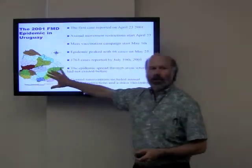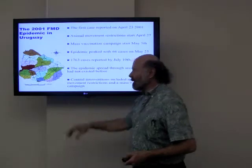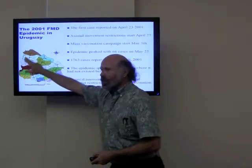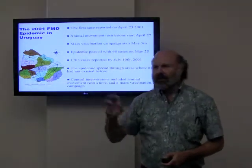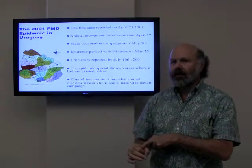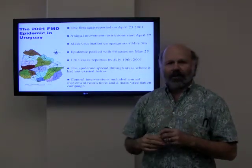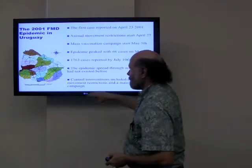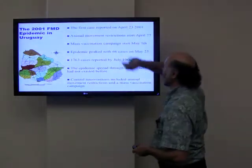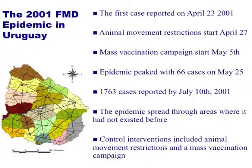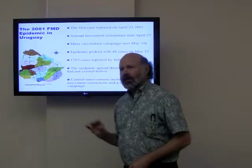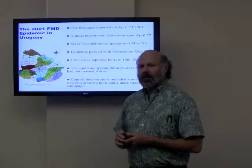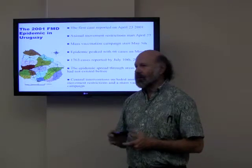We set up a network with county-wide data. Instead of cities, we had counties; we knew how many farms were in each county and what the road patterns were. Instead of airline travel, we had cattle moving on trucks. We knew the first cases were on April 23rd, and we knew what interventions were taken. We wanted to see if we could reproduce the epidemic with our model, and then ask what could have been done better if this ever happens again.